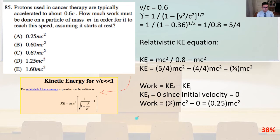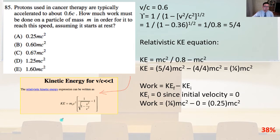The relativistic kinetic energy equals gamma times mc squared minus mc squared, which equals mc squared divided by 0.8 minus mc squared. So KE equals 5/4 mc squared minus 4/4 mc squared, equals 1/4 mc squared. The work equals KE final minus KE initial, and KE initial equals 0 since the particle starts at rest. So work equals 1/4 mc squared equals 0.25 mc squared. That is answer A.